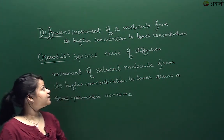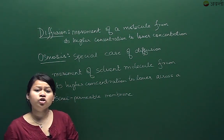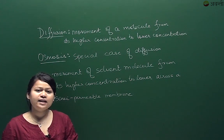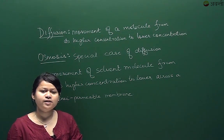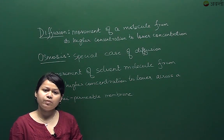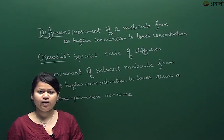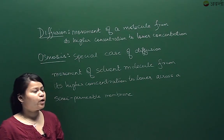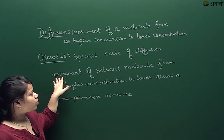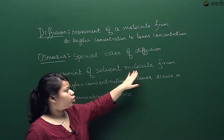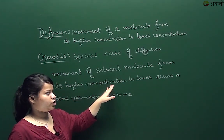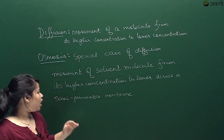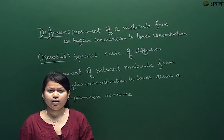Another phenomenon is osmosis. Osmosis is a special case of diffusion. In the case of osmosis, there is a semi-permeable membrane involved. Osmosis is the movement of a solvent molecule from its higher concentration to its lower concentration across a semi-permeable membrane.